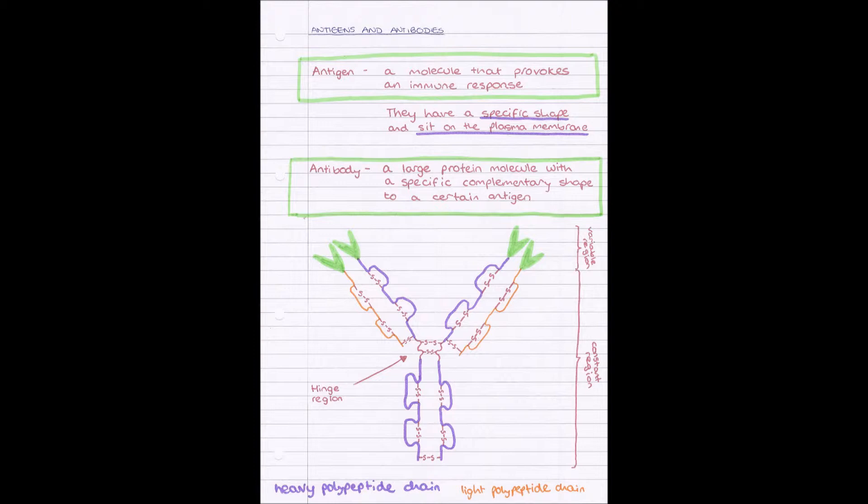The purple parts, one, two, three, four, and they are all connected by disulfide bridges. That's the S's for sulfurs. And then we have two light polypeptide chains, again connected by disulfide bridges.